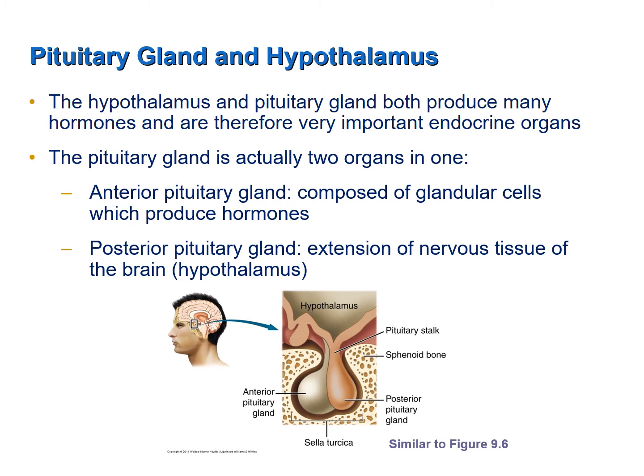The anterior portion is called the anterior pituitary gland, and it contains glandular tissue — cuboidal cells which produce various hormones. The posterior pituitary gland, in contrast, is actually composed of nervous tissue that is an extension of the hypothalamus. The pituitary gland is surrounded by the sella turcica, or Turkish saddle, of the sphenoid bone of the skull.